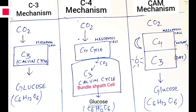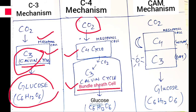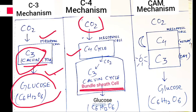In C3 plants, carbon dioxide enters the mesophyll cell where the C3 Calvin cycle takes place, producing glucose for energy. In C4 plants, carbon dioxide enters the mesophyll cell and the C4 cycle occurs first, producing CO₂ which then enters the C3 cycle in the bundle sheath cells. Bundle sheath cells are present in both C3 and C4 plants, but in C4 plants these cells contain chloroplasts, making them specialized. The final product is still glucose (C₆H₁₂O₆).